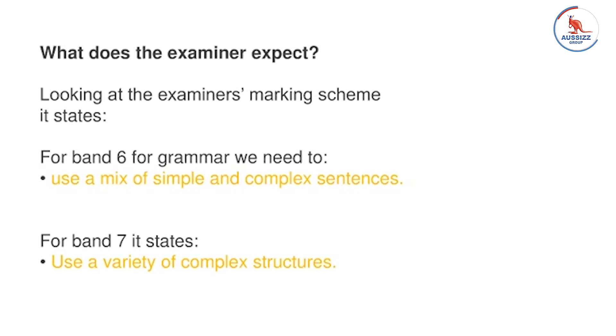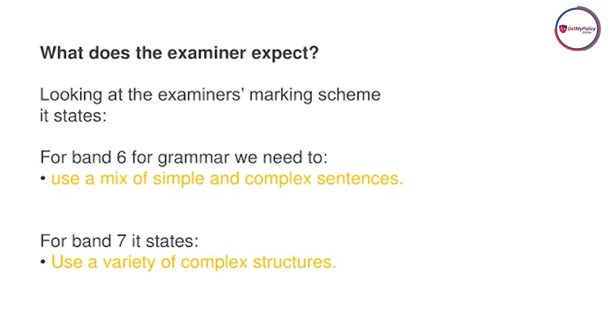If you look at the marking scheme, for a Band 6 we need to use a mix of simple and complex sentences. For a Band 7, it states that you have to use a variety of complex sentences. That variety simply means you have to make different types of simple, compound, and complex sentences, and include more than one compound sentence. The question always arises: how do we add complex sentences? What is the basic structure and format?